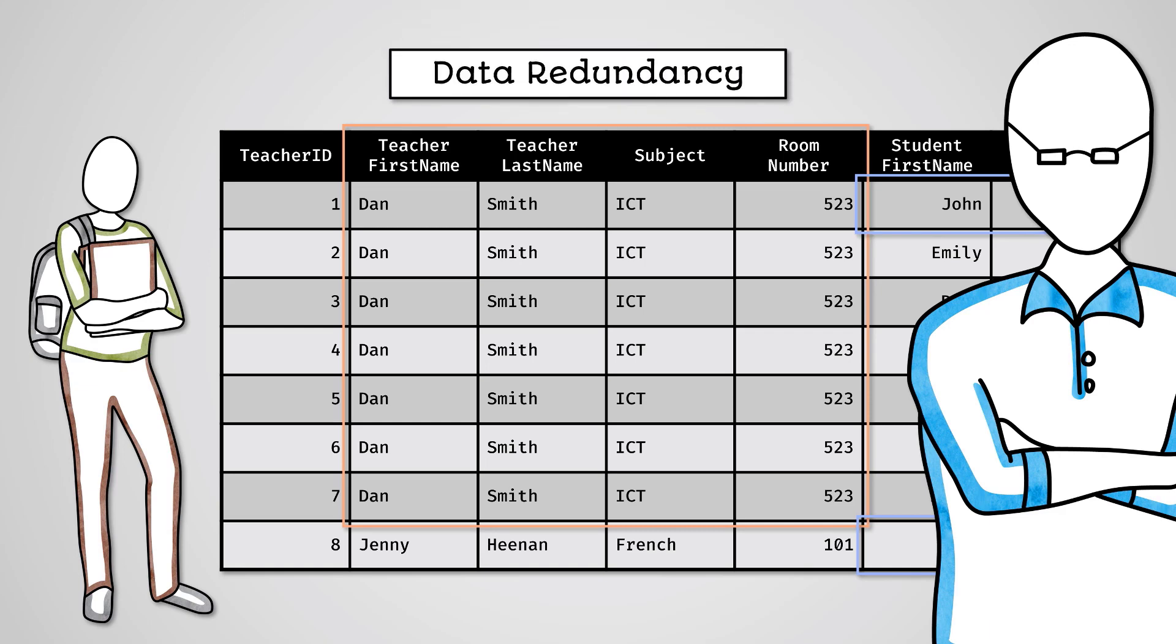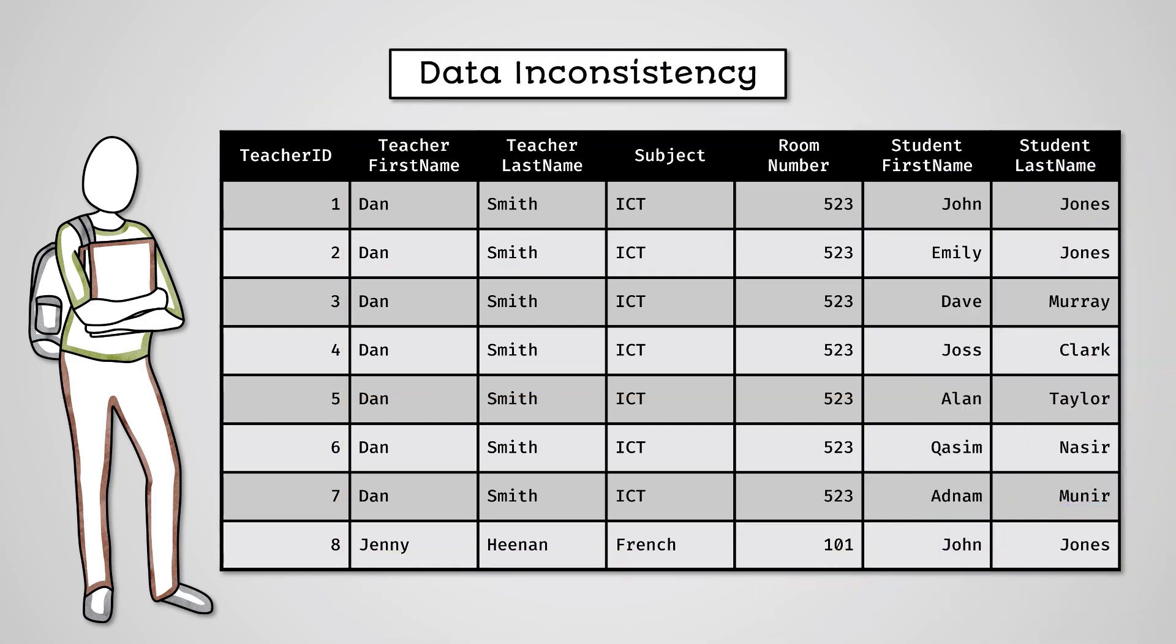It also causes the issue of data inconsistency. We've entered Dan Smith seven times. This could very easily lead to us making an error in one of these rows, leading to the data being inconsistent. Additionally, if at a later date we need to change some data related to Dan Smith, such as his room number, we need to update it in several places. We might accidentally miss one of the rows, creating further data inconsistency.